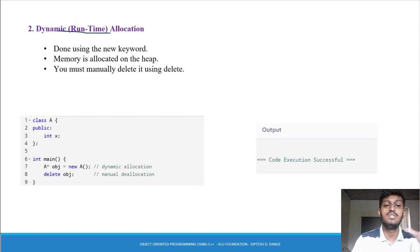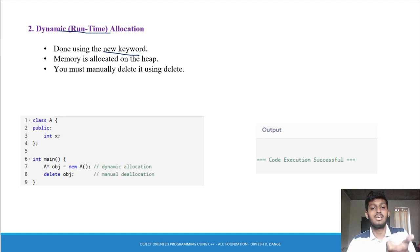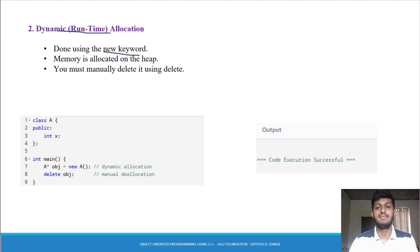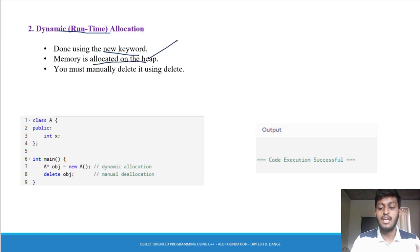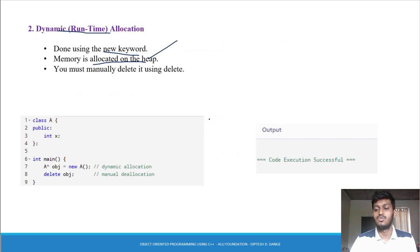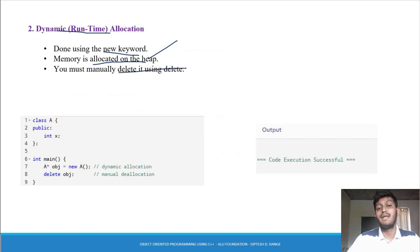Now dynamic allocation — done using the new keyword. Dynamic allocation कैसे करते हैं? Using the new keyword. यहाँ पर new and delete का concept लगने वाला है — new and delete are memory management operators, जो हमने special operators में सीखा था. Memory is allocated on the heap — heap form में. So you must manually delete it using the delete keyword.